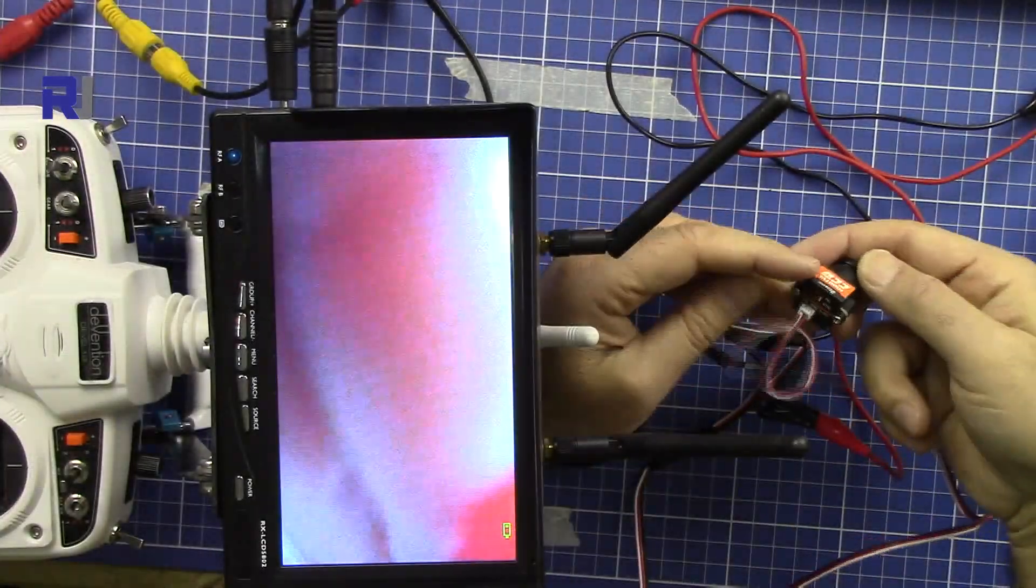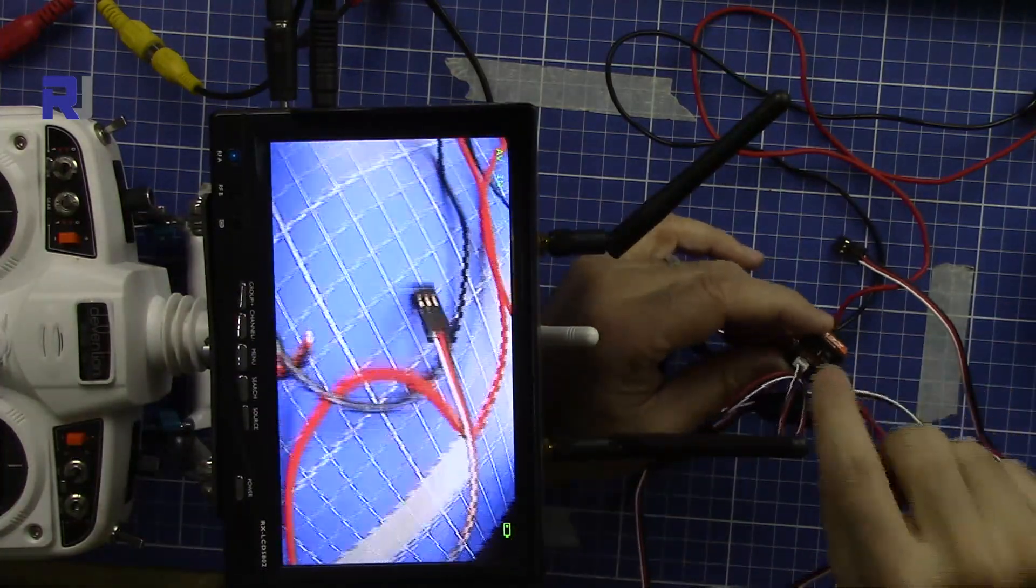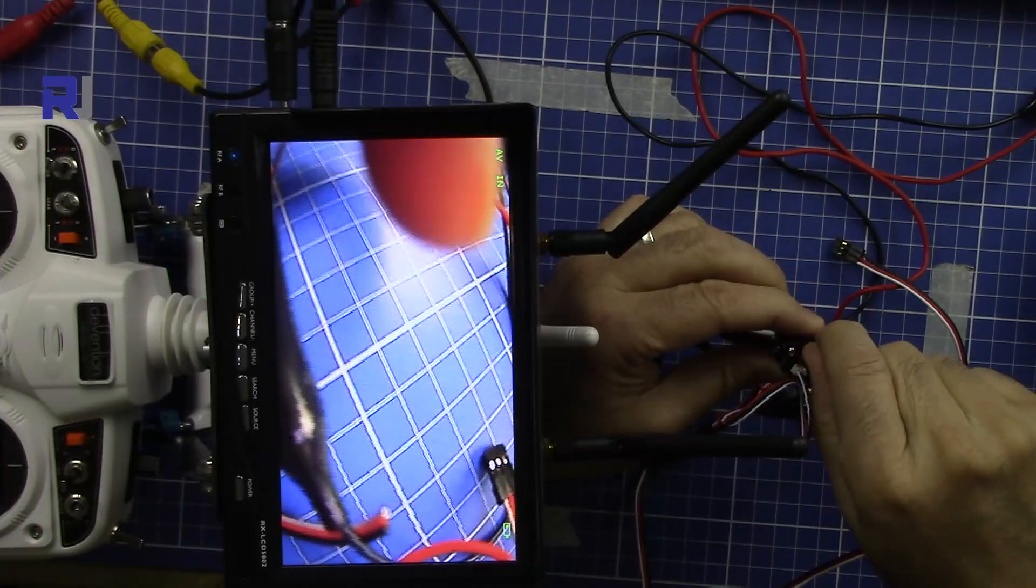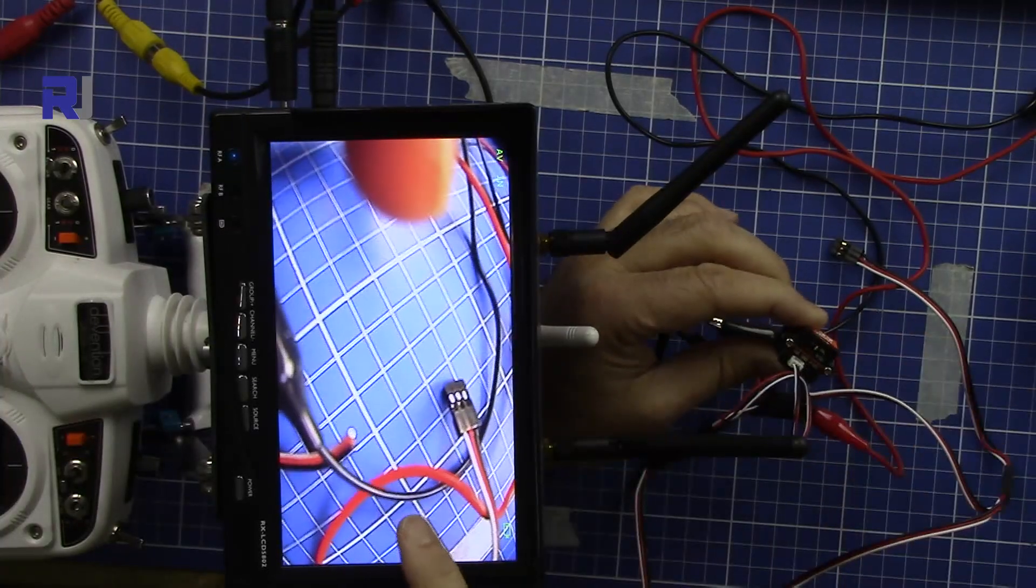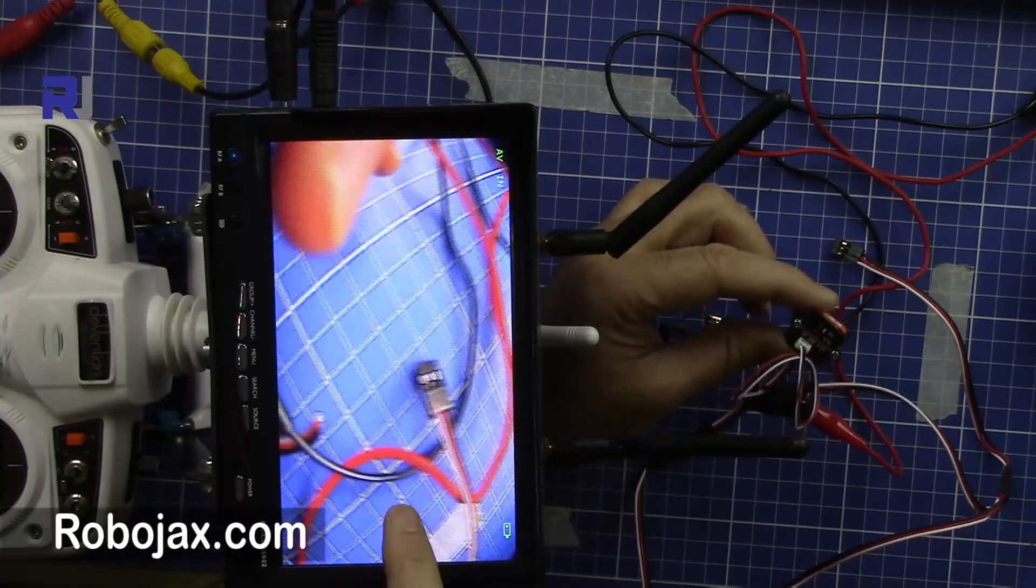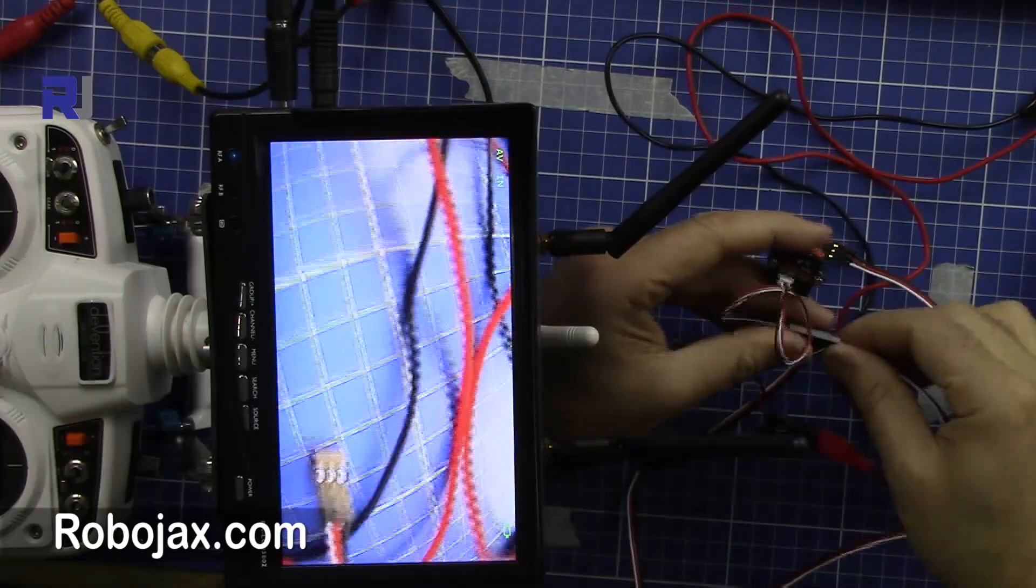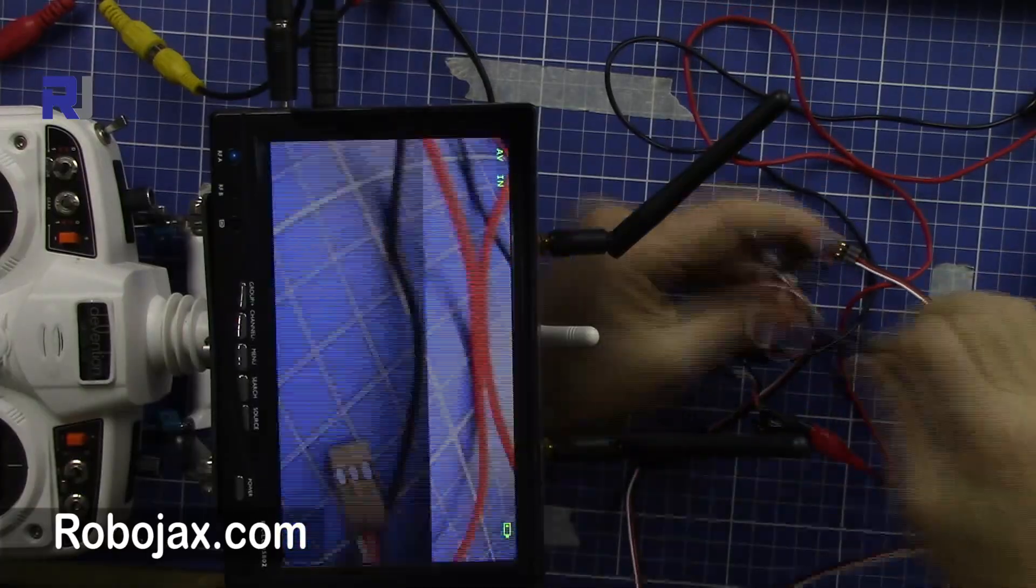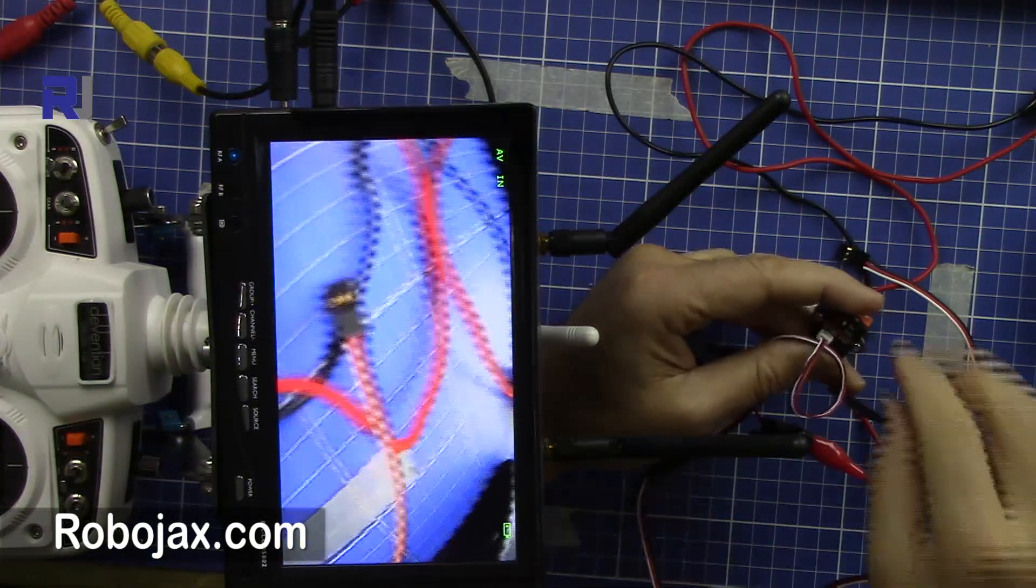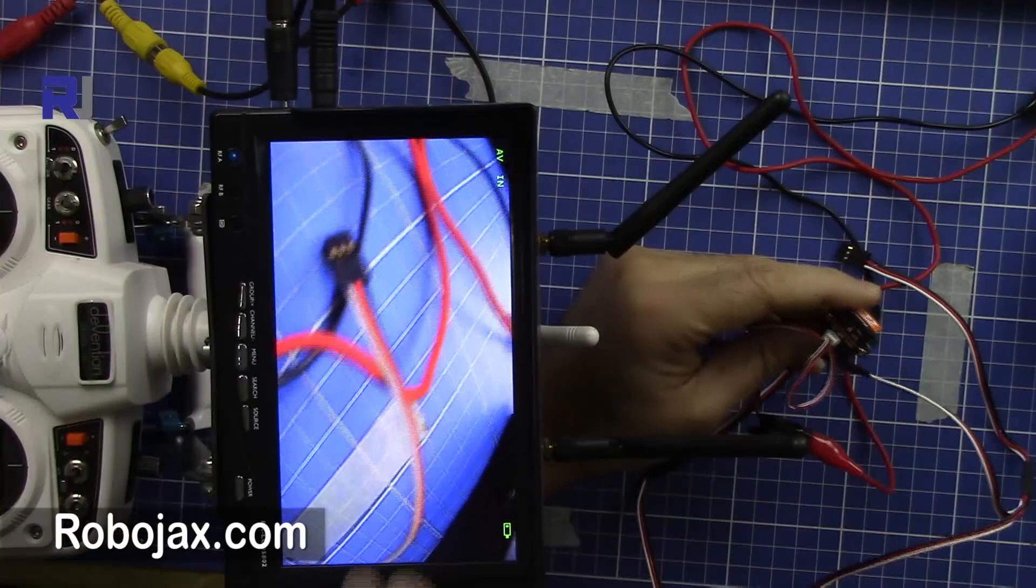So here you go. And if you see here now, my system is in NTSC. If I switch it to PAL nothing happens. The reason for that is that this FPV receiver is a multi-system, so even if I disconnect it now it's in PAL, connected.